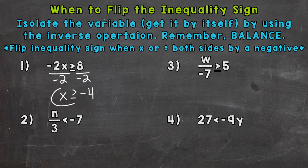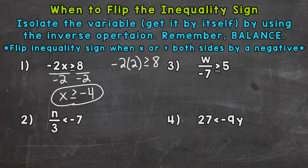In this case, x has to be greater than or equal to negative 4 to be a solution. Let's test a number greater than or equal to negative 4 — let's try 2. Negative 2 times positive 2 is negative 4, and negative 4 is greater than or equal to 8, which is not true. So not flipping the sign gives us the opposite of what we want — incorrect solutions.